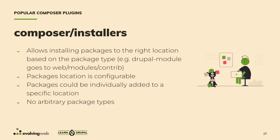Composer Installers is a plugin that installs packages to the correct location depending on package type. For example, a Drupal module should go to web/modules/contrib, not the vendor folder. This is configured by default in the Drupal project templates. Packages locations are configurable and individual packages can be assigned to specific locations. However, this plugin only works for previously defined package types — no arbitrary types are allowed, for security reasons.